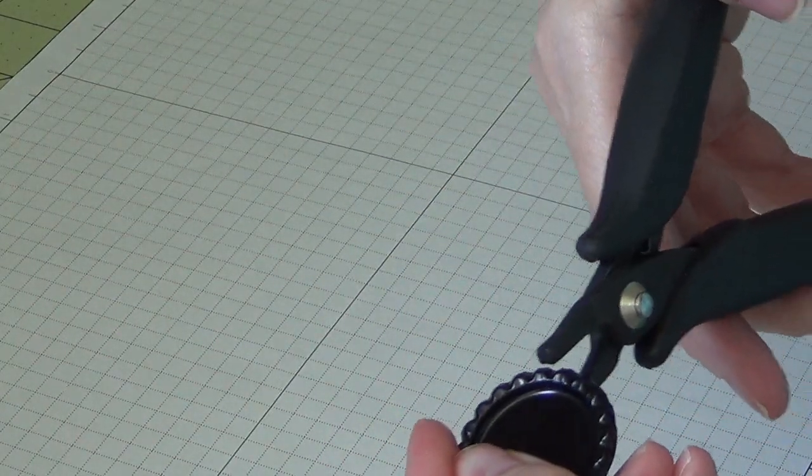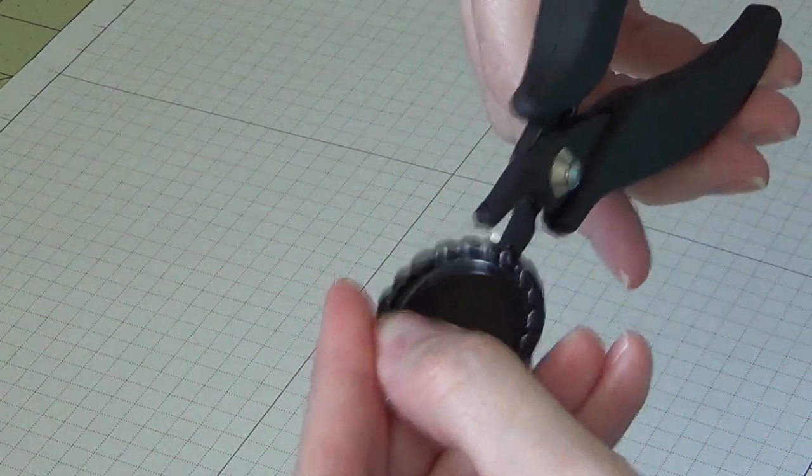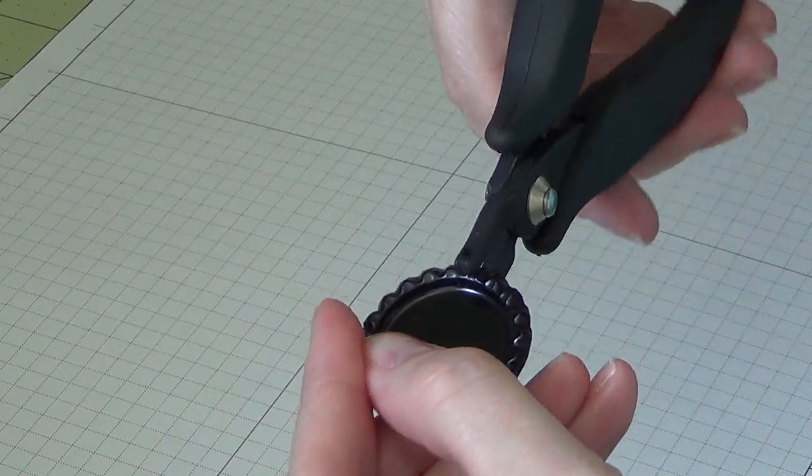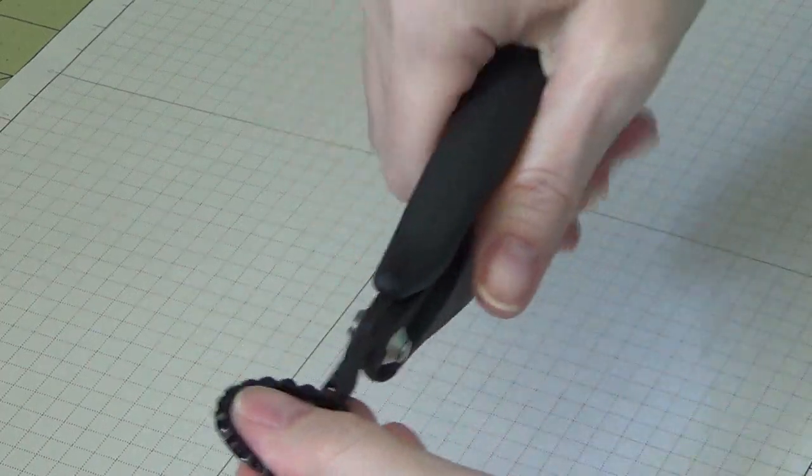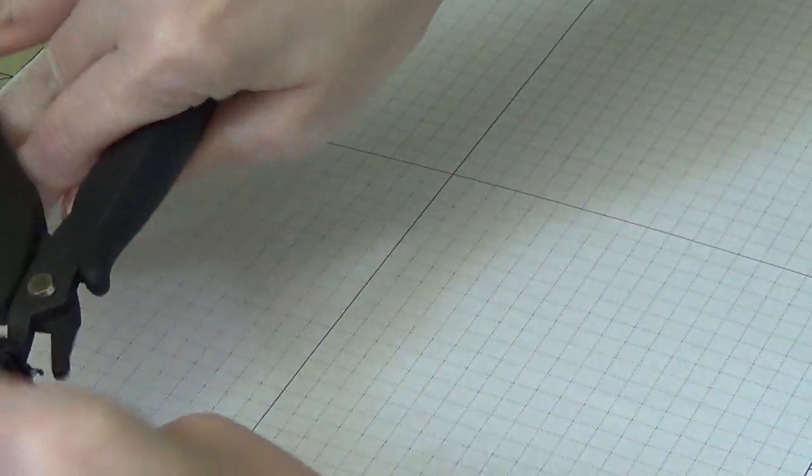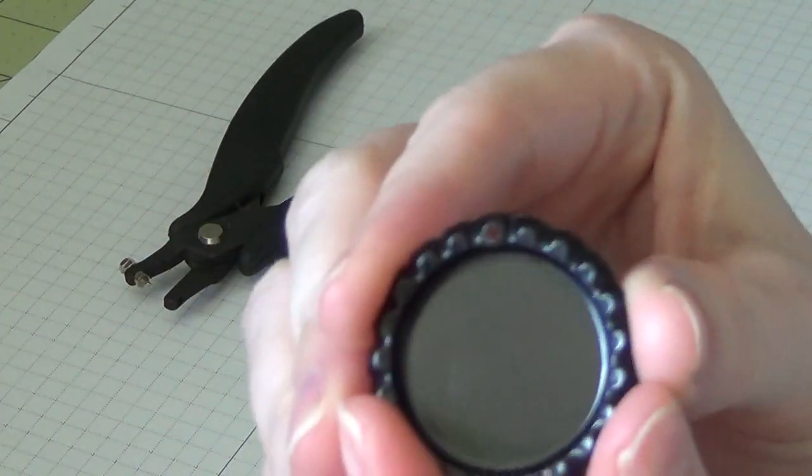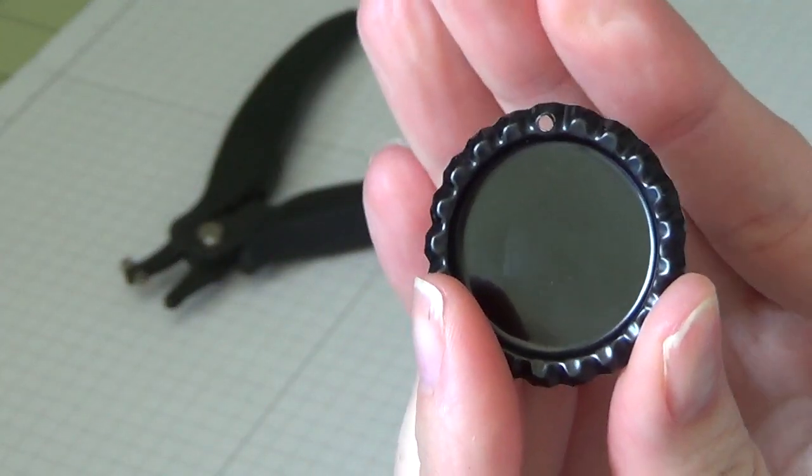I'm just going to stick it inside the little divot here. It'll just kind of hook itself in there. Then you just punch down, and you can hear it kind of click. That little piece will fall out, and then there you have your perfect hole.